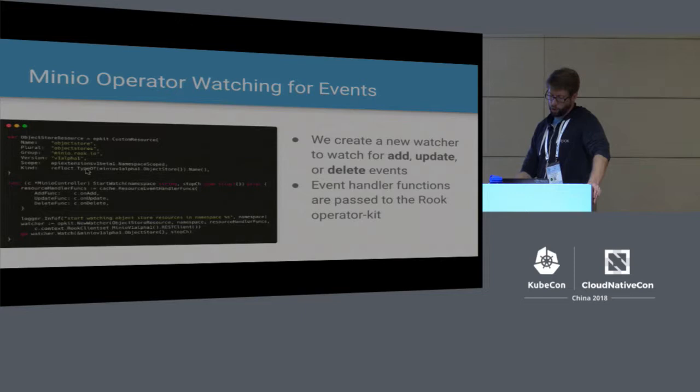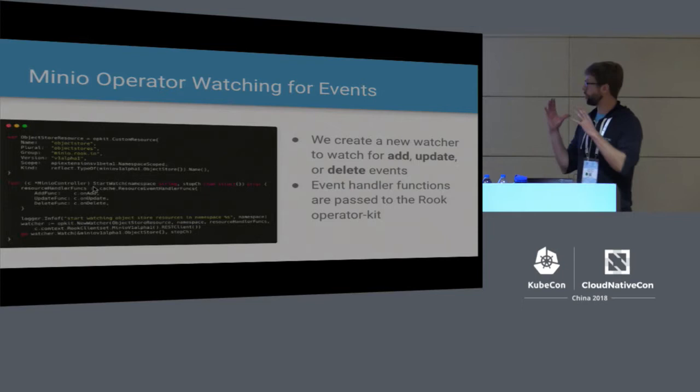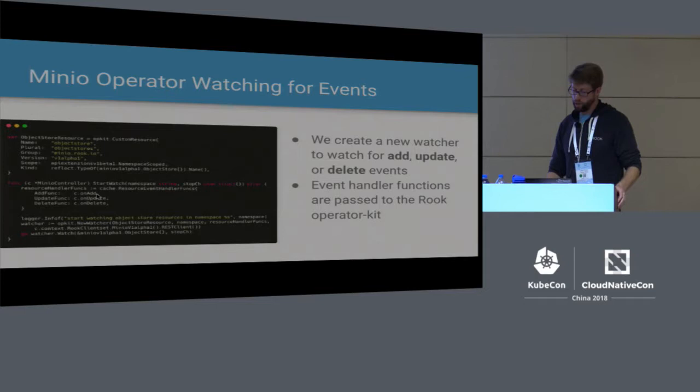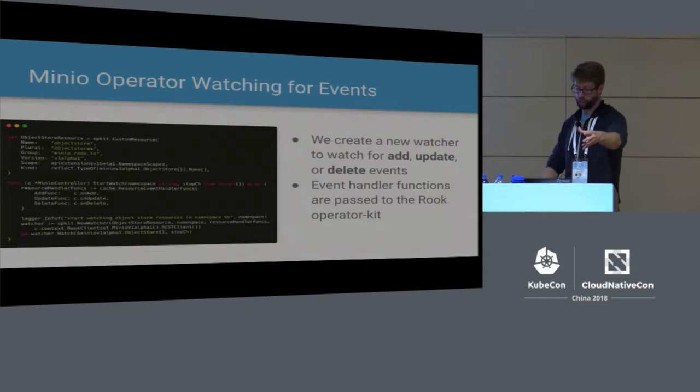Some Go code here shows that when the Minio operator starts up, it begins a watch for Minio instances to be created. The key part is we have an add function, an update function, and a delete function — when the user says they want to add a Minio object store to the cluster, it runs that add function. Same with update and delete.